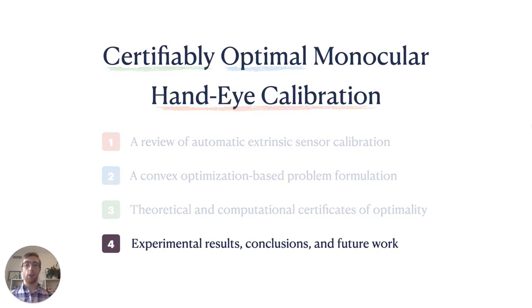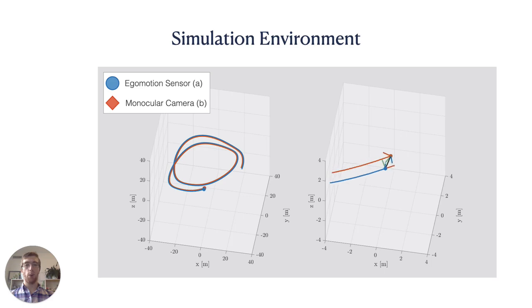With an analysis of our algorithm's optimality properties in hand, let's see if these theoretical predictions are borne out in practice before concluding and discussing future work. We generated a synthetic, smooth pose trajectory of a monocular camera and ego-motion sensor to test our algorithm. The trajectories of the sensors are being traced on the image on the left, while the image on the right shows a zoomed-in view of the trajectory centered on the sensor platform with the rigid extrinsic transformation in black. This trajectory provides the noise-free measurements that parameterize our QCQP. The trajectory includes motion about multiple axes, satisfying the observability criteria of lemma 1.